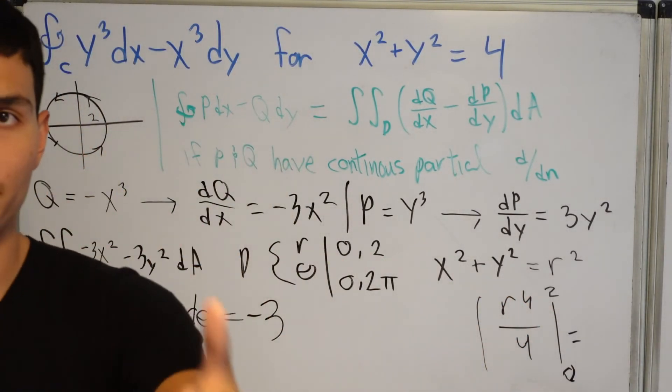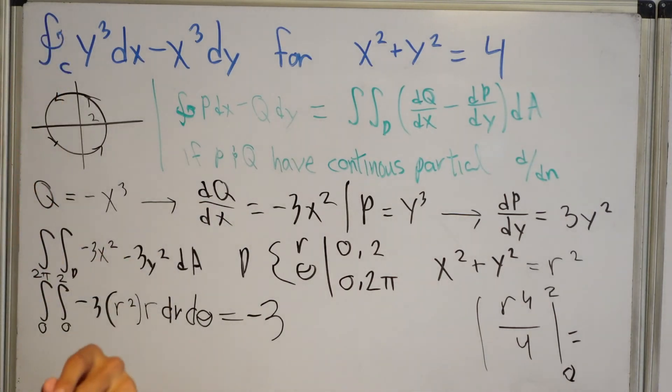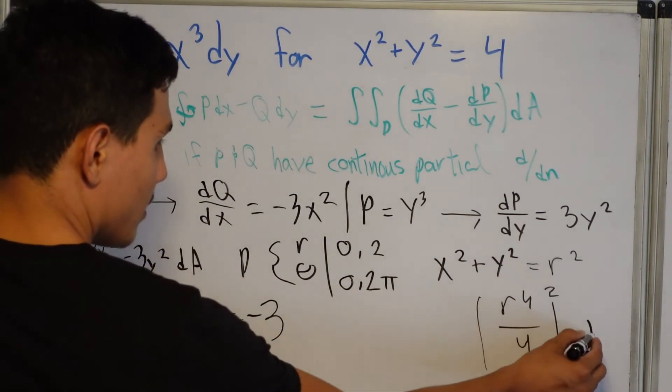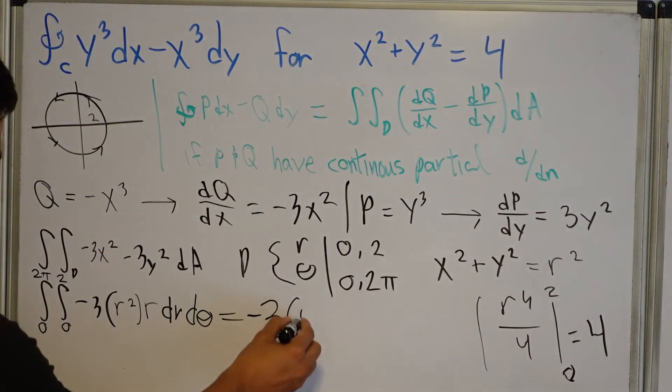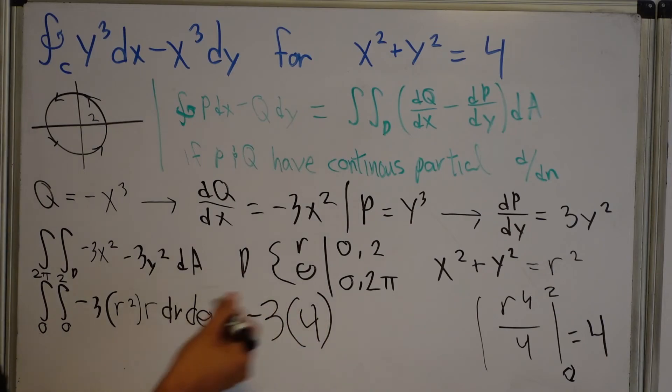So let's just plug this in real quick before we put it back into here. Okay. 2 to the power of 4 is what? It's 16. 16 divided by 4 is 4. Okay. So we get 4. Okay. So we have a 4 here.